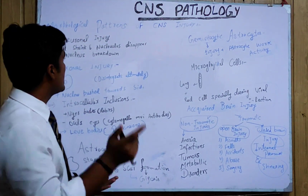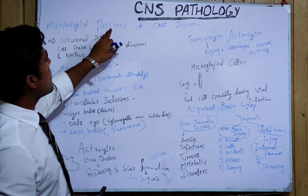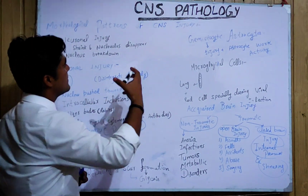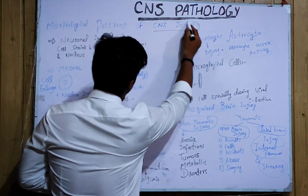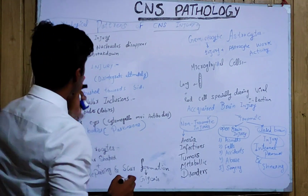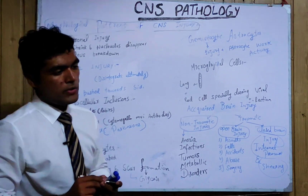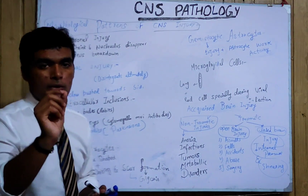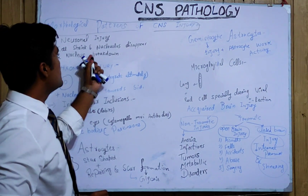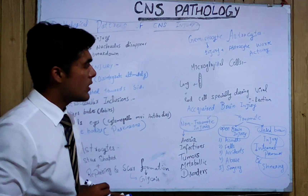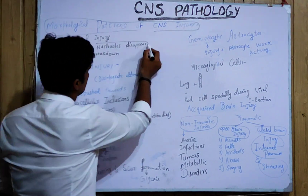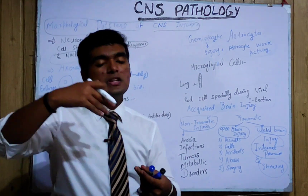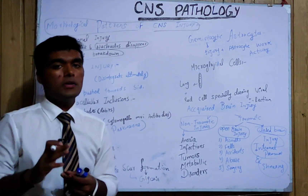Let's come to our topic. First of all, when we talk about the diseases, there are some morphological patterns that we have — morphological patterns of CNS injuries. First is Neuronal Injury. Neuron is key in CNS, and in neuronal injury the cell shrinks, the nucleolus disappears, and the nucleus breaks down. This is the mechanism by which the process of injury occurs in that cell.